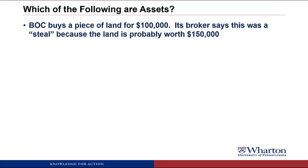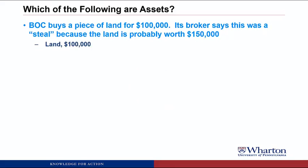BOC buys a piece of land for $100,000. Its broker said this was a steal because the land is probably worth $150,000. This is an asset which we'll call land. It meets the first criteria because there was a market transaction where we acquired ownership. The value of the benefits is assumed to be what we paid for it, which is $100,000. We ignore what the broker thinks the land is worth because we use the more objective number of what we actually paid.